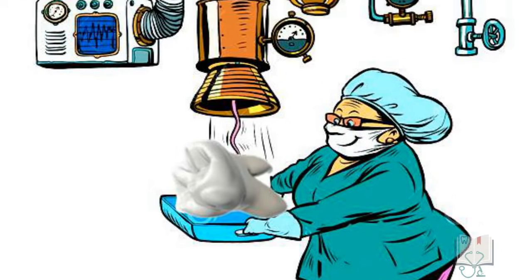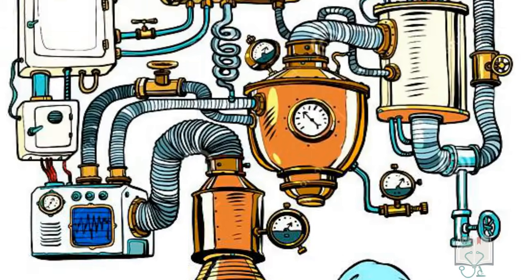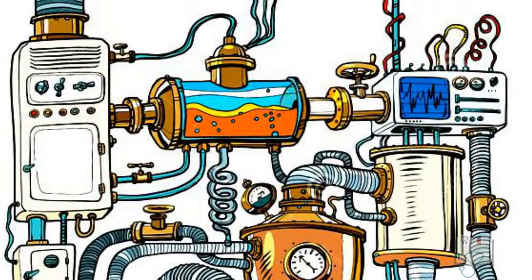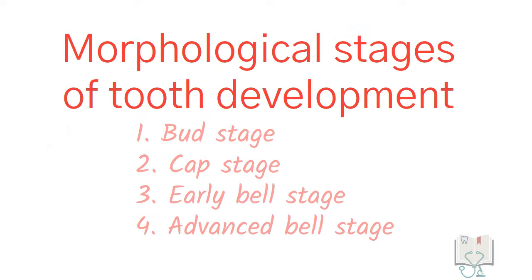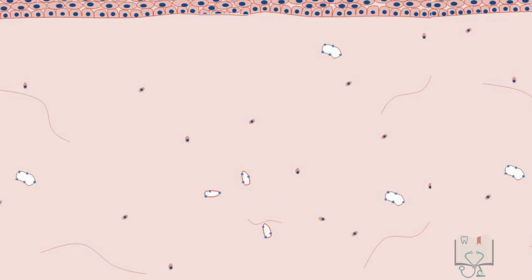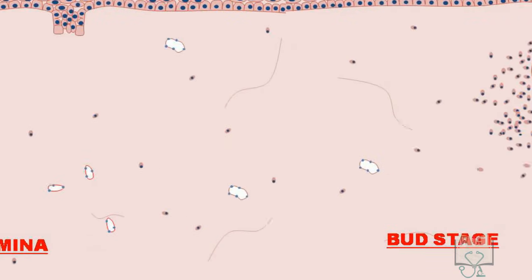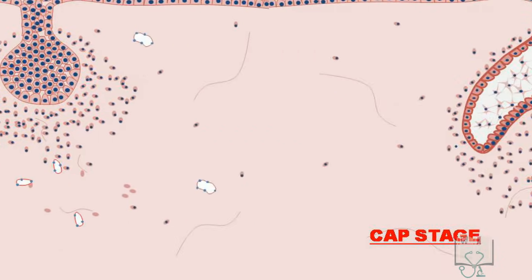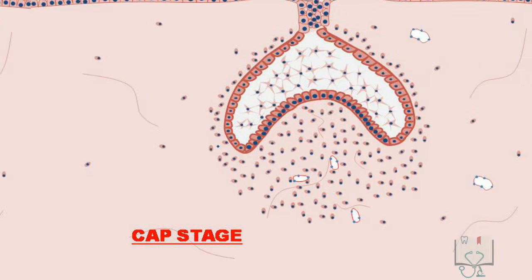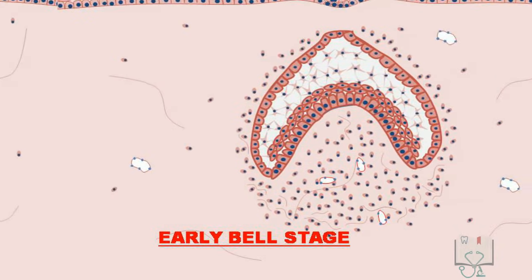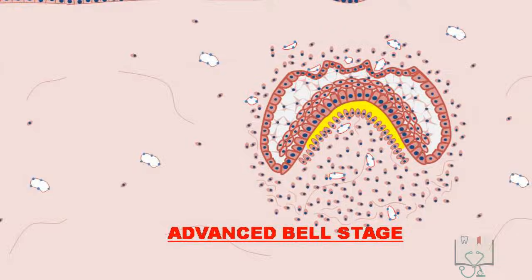Tooth development is a very complex process with various moving parts. Commonly, it is studied under the heading morphological stages of tooth development — that is, we study the process of tooth development under the stages of changes in the morphology, which is the shape and structure of the enamel organ.